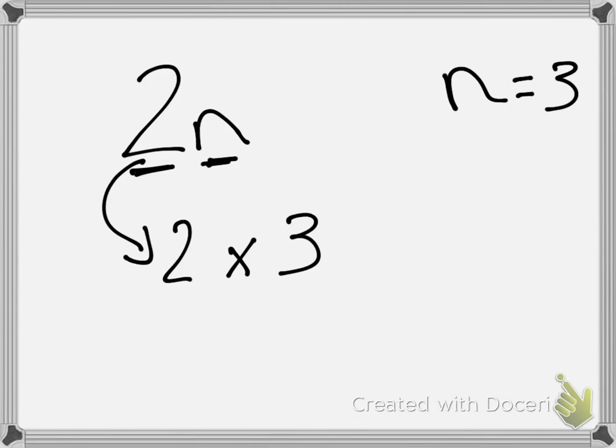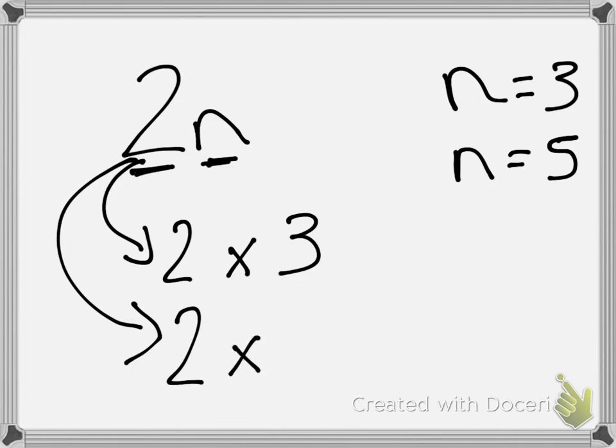Okay, now let's say n was worth 5. So if n was worth 5 and not 3, then you would do 2 multiplied by 5.